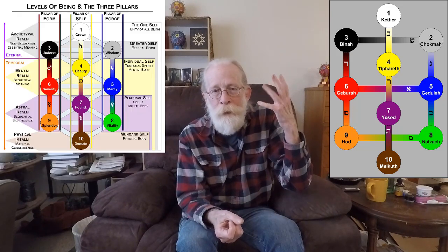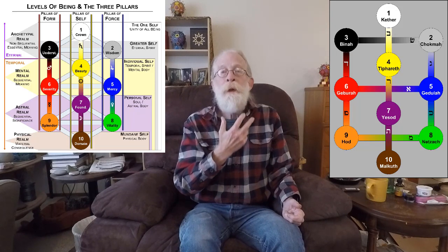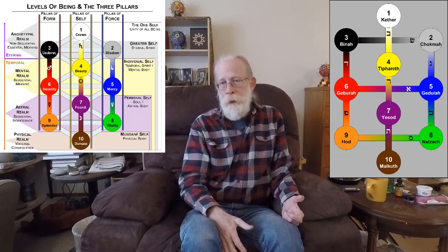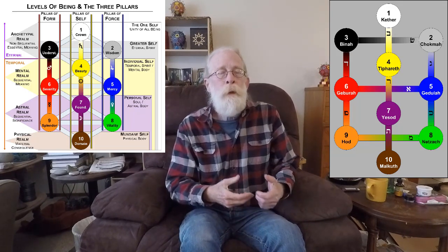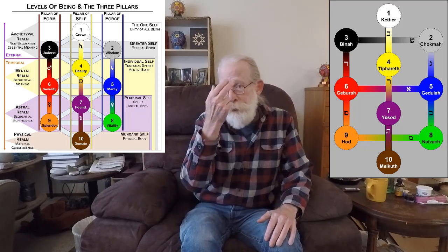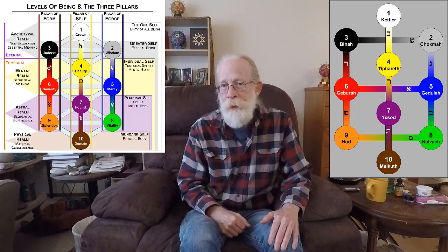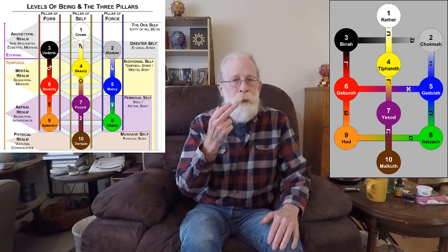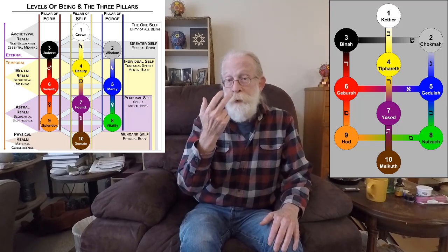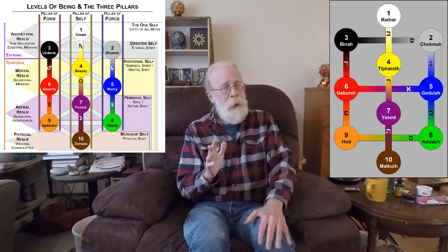The pillar of mercy, the pillar of severity, and the pillar of equilibrium. This is the pillar of self, the levels of self that we define in Kabbalah. So it establishes three pillars. It also is the first crossings of paths.